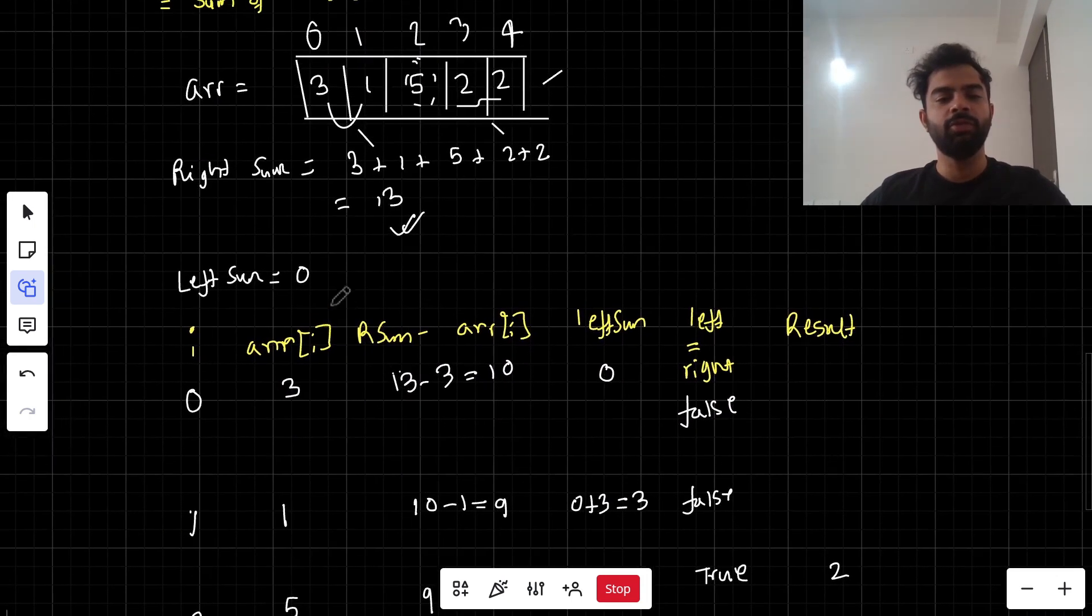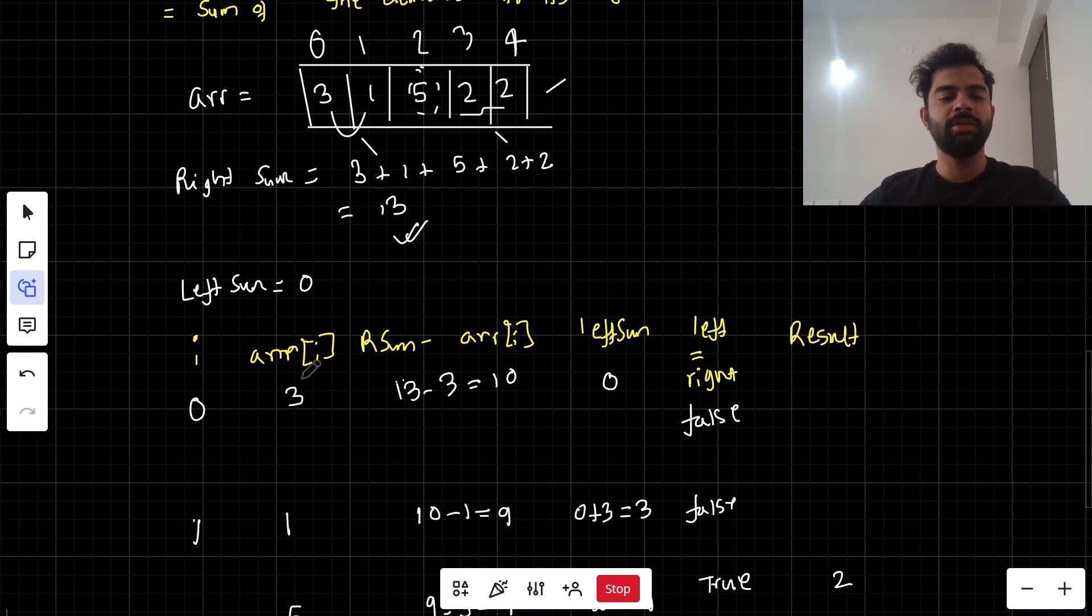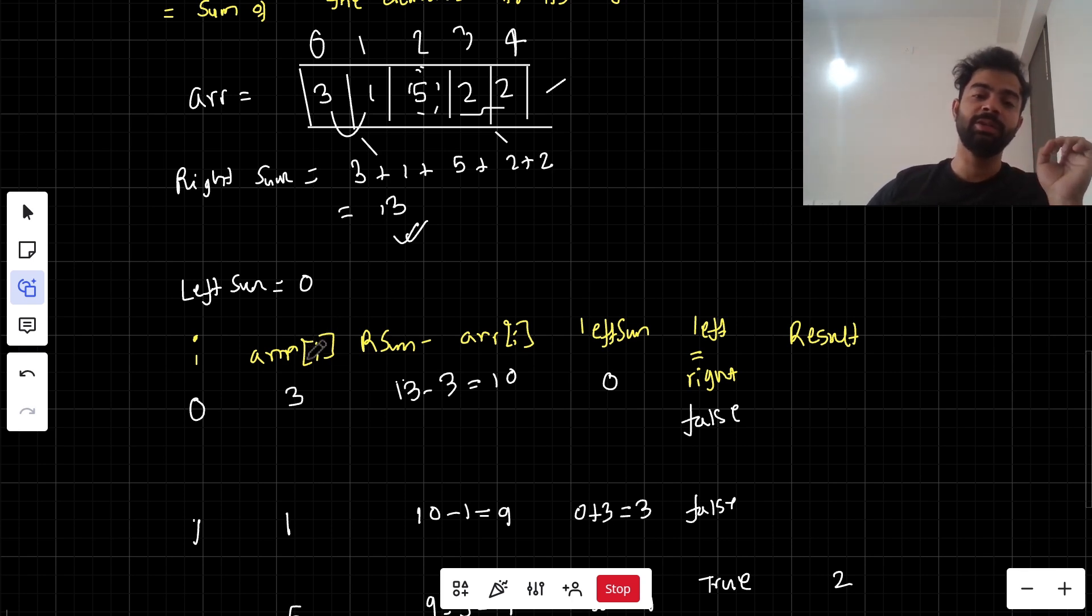We have to keep a left sum variable. Our loop is going to run from start to end. Zero is the starting index, which starts from 3, and the first element is 3.